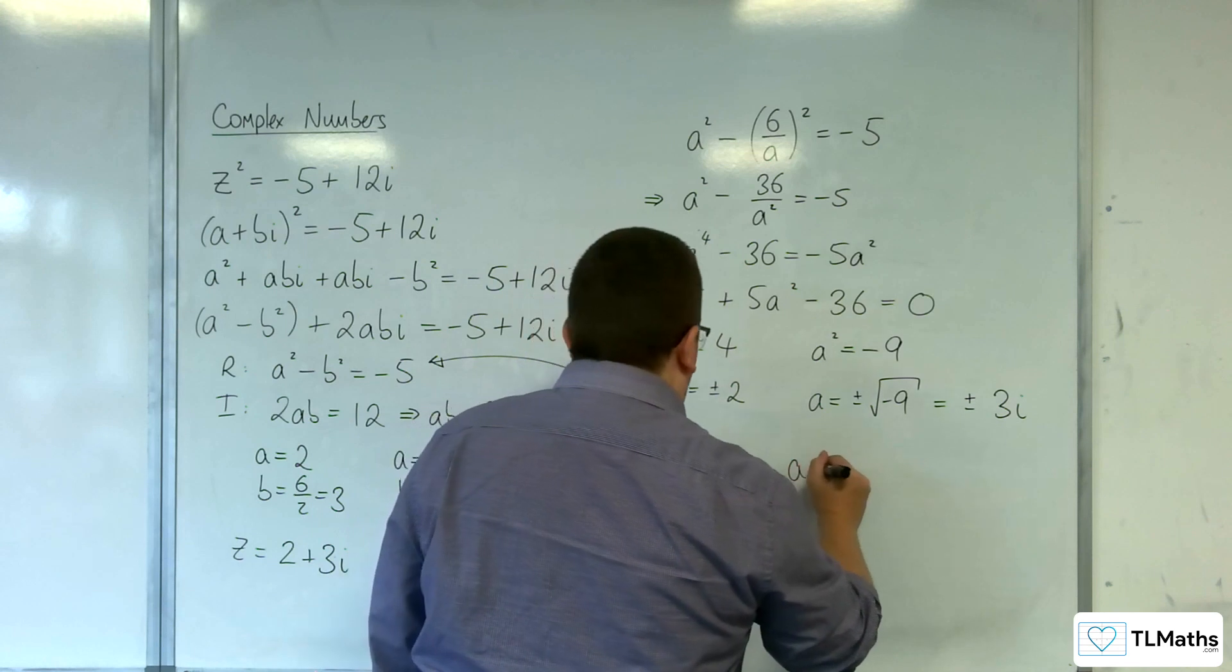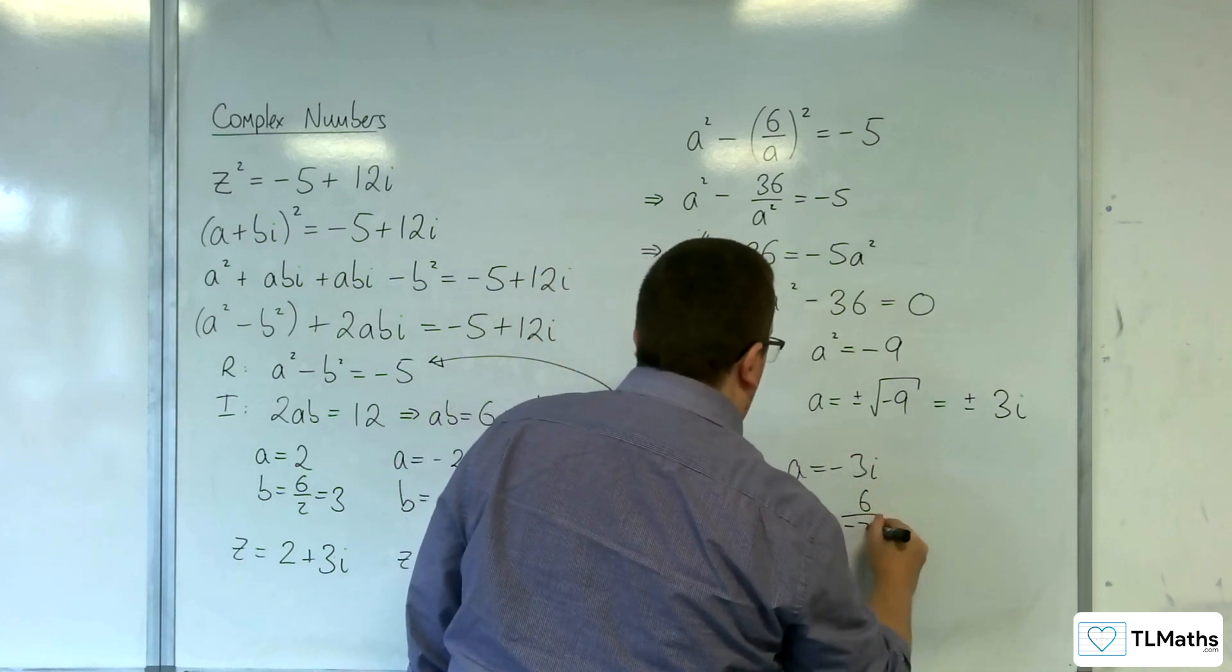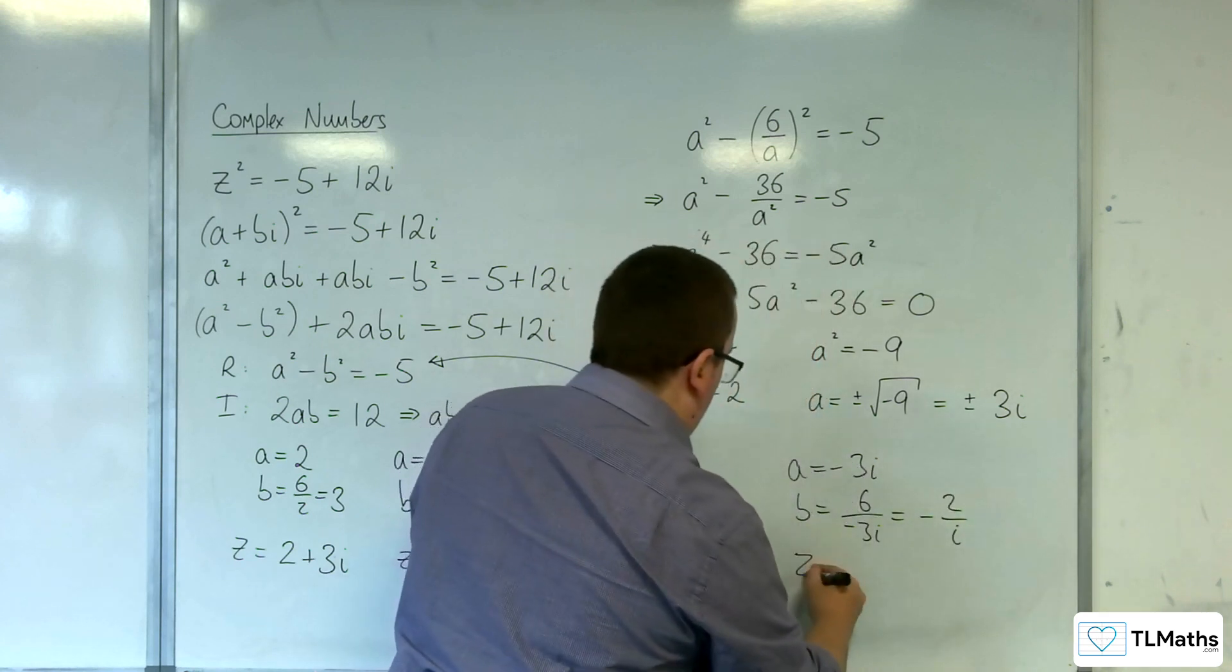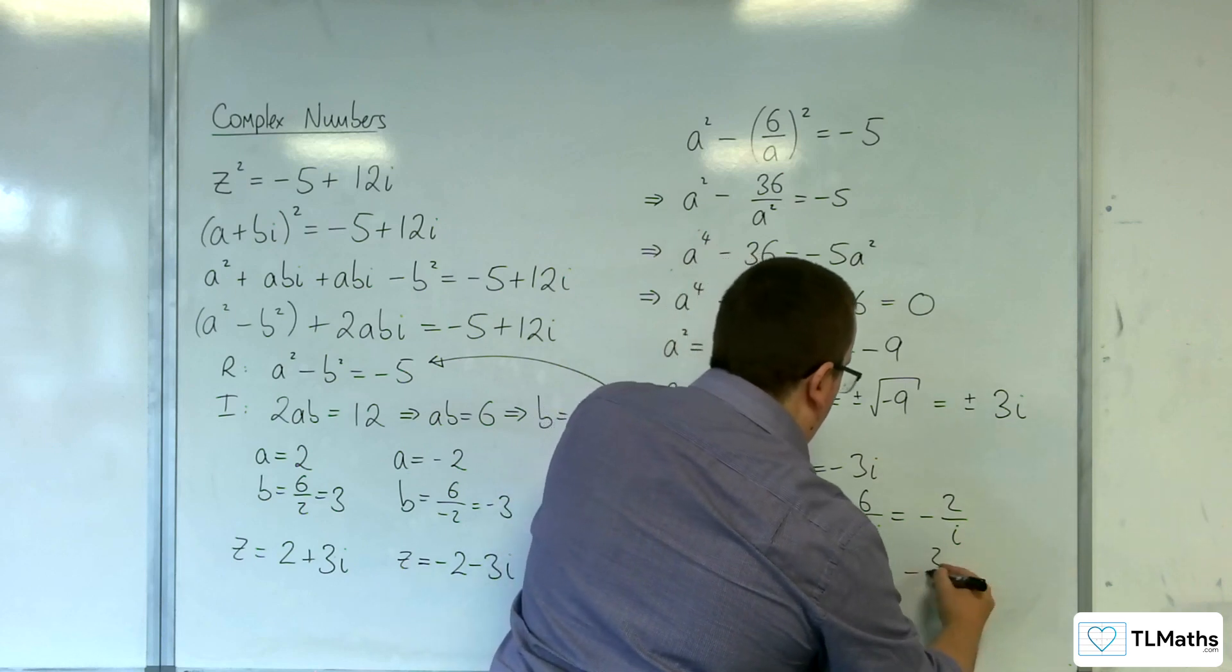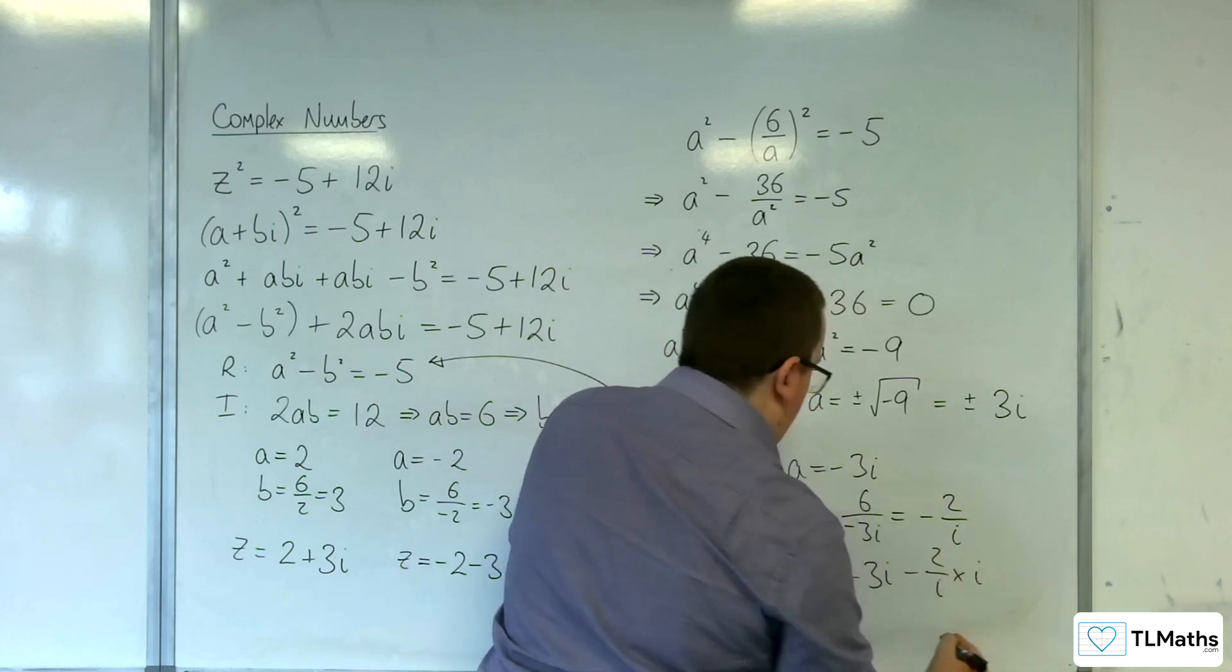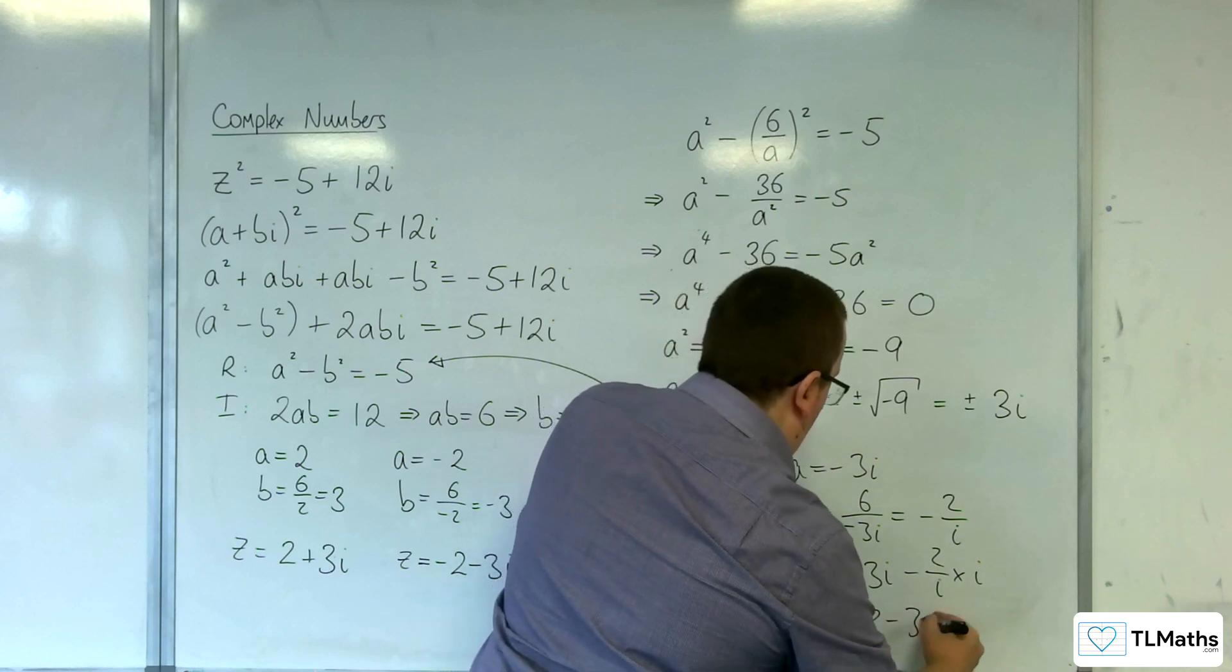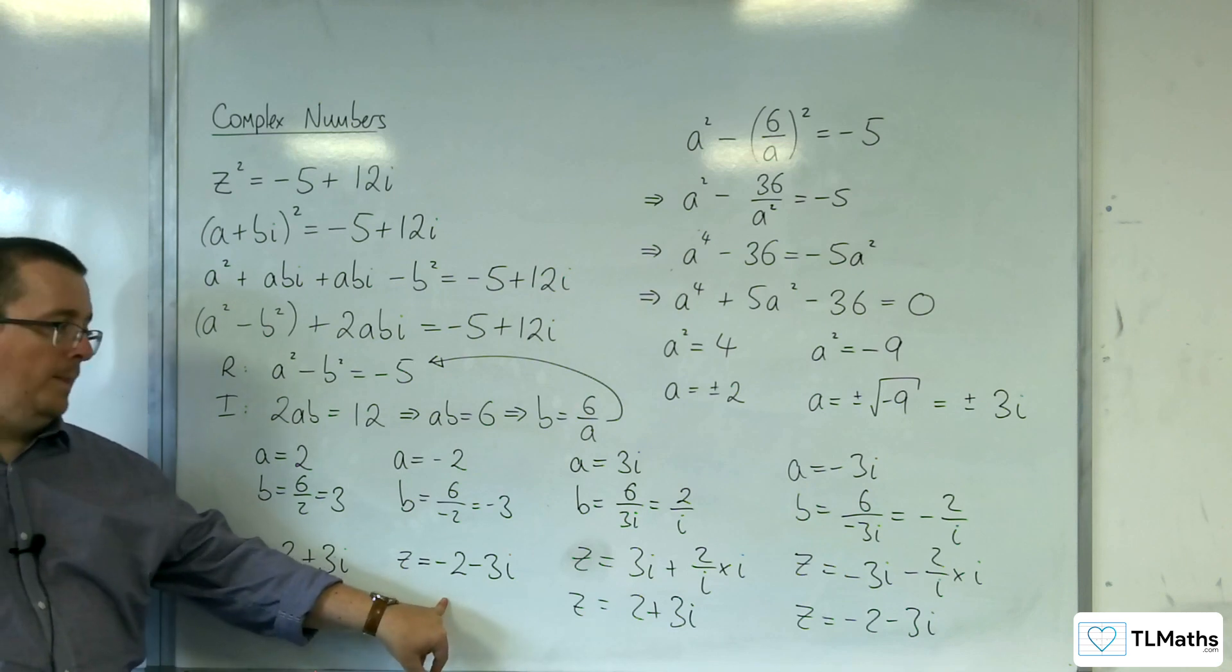So, if you put in the a is -3i, then the b is 6 over -3i. So, -2 over i. So, z is equal to a plus b times i. And so, you get the -2 take away 3i, which is precisely the same as this one here.